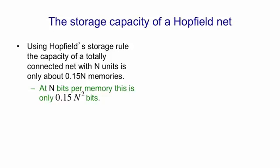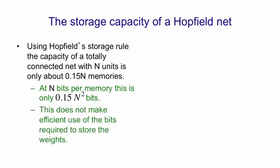Each memory is a random configuration of the n units, so it has n bits of information in it. And so the total information being stored in a Hopfield net is about 0.15n² bits. This doesn't make efficient use of the bits that are required to store the weights. In other words, if you look at how many bits the computer is using to store the weights, it's using well over 0.15n² bits to store the weights. And therefore, this kind of distributed memory in local energy minima is not making efficient use of the bits in the computer.